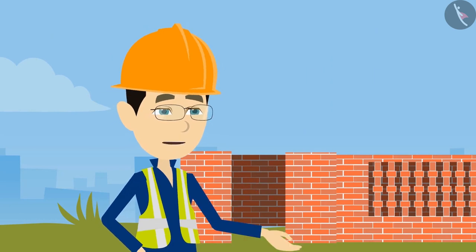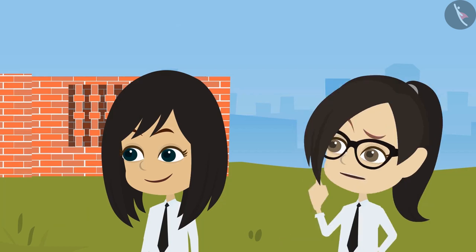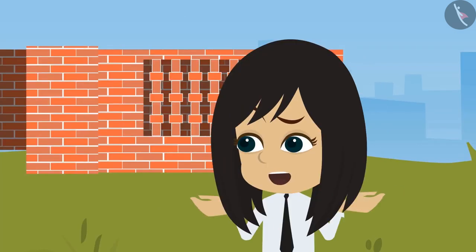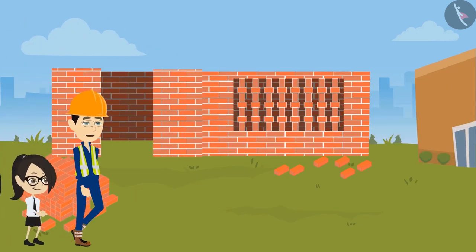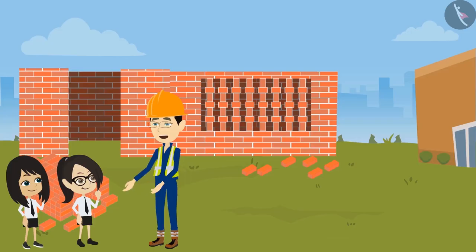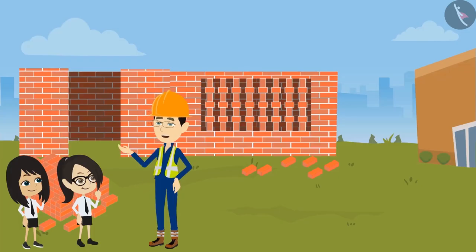Sir, where else do you use the brick pattern? We can also make vents using bricks. What is a vent? The gaps that are left in the wall for air circulation are called vents. See, like we have also made some vents in your canteen wall — you can see many similar vents in buildings. I have made a pattern in this vent. Similarly, you can see very beautiful patterns in the vents of buildings.